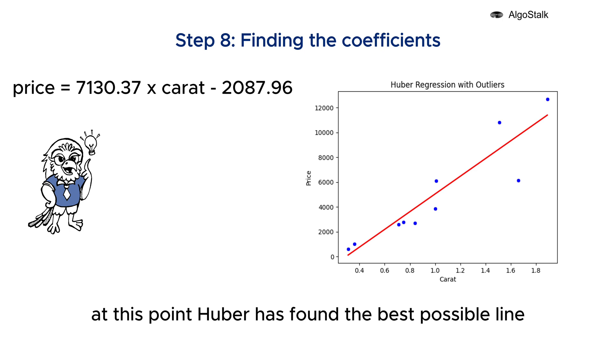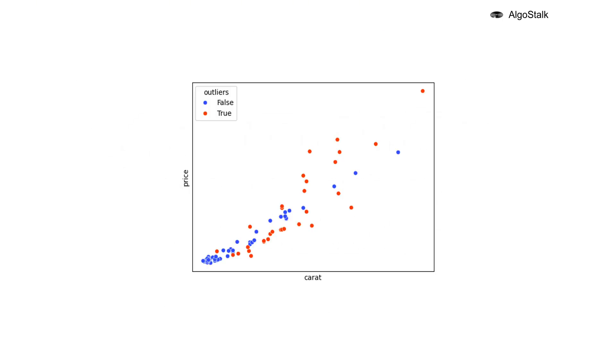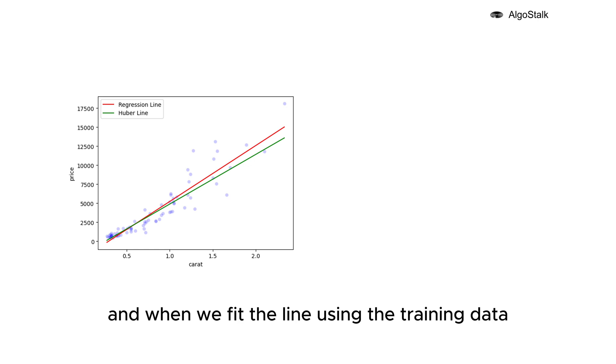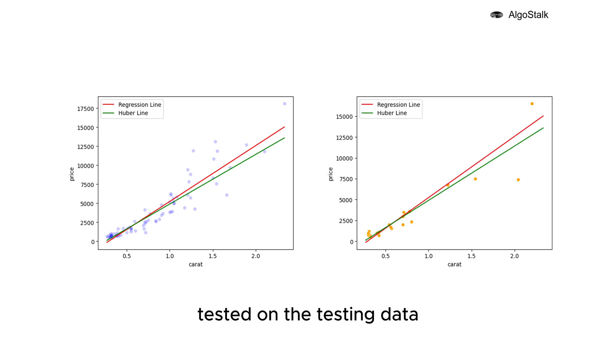Linear versus Huber on entire dataset. Running the Huber on the entire dataset, we can see what data points are treated as outliers by Huber. And when we fit the line using the training data and test it on the testing data, we clearly notice that Huber fits the dataset better than linear regression.